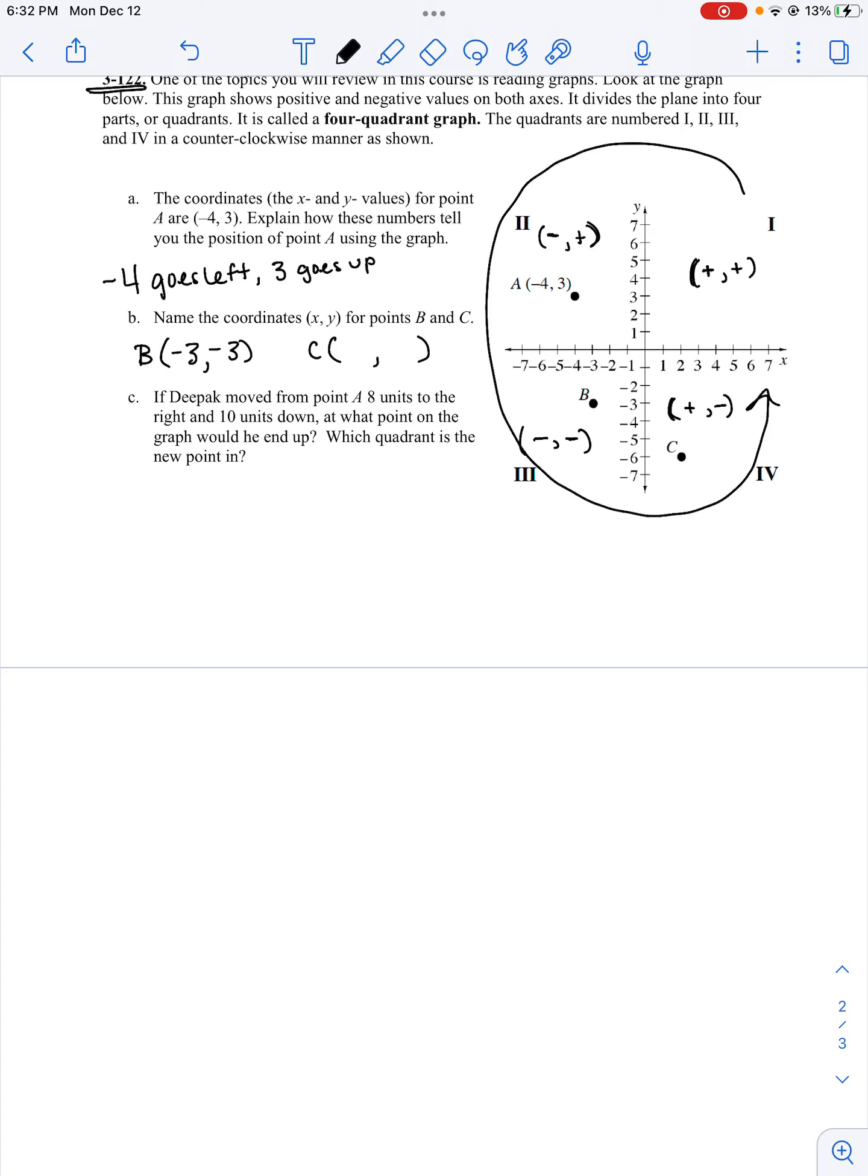Part C: If Deepak moved from point A, 8 units to the right and 10 units down, at what point on the graph would he end up? Which quadrant is the new point in? So we're at negative 4. He goes 8 units. Negative 4 to 4, or to 0 is 4, plus 4 more, would move him here. But then, he moves 10 units down. We're at 3. There's 3 of them. We have 7 left. He would end up at negative 7. So it would be 4, negative 7. Which is quadrant 4.